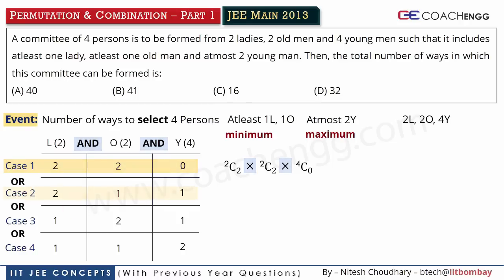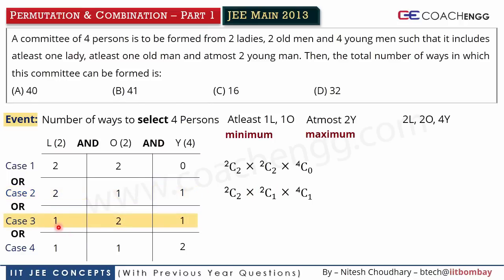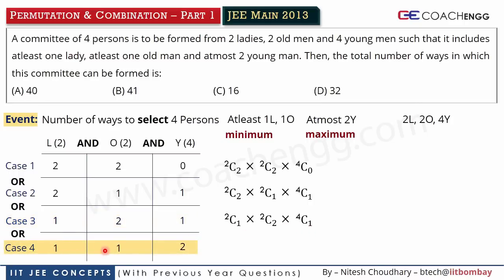Similarly, for case two: 2C2 × 2C1 × 4C1. For case three: 2C1 × 2C2 × 4C1 — multiply these. So for case three we get the total number of ways of completion. For case four: 2C1 × 2C1 × 4C2 — calculate the total number of ways for this case as well.